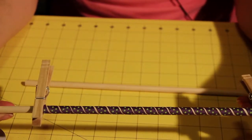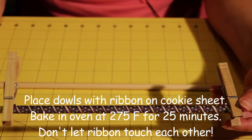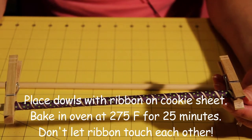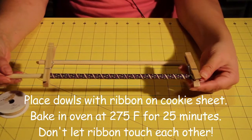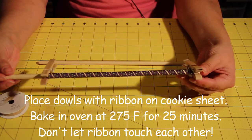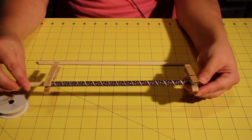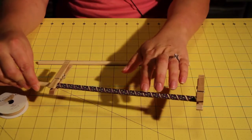So now this is ready to go in the oven to bake at 275 degrees for 25 minutes. You want to make sure that you put it on a cookie sheet and if you have multiple dowels on the cookie sheet just make sure that none of the ribbon is touching each other.